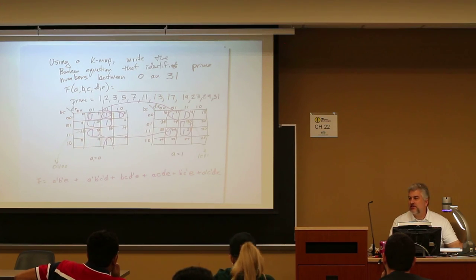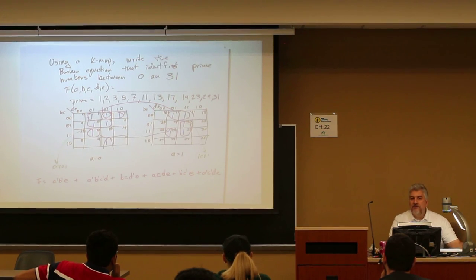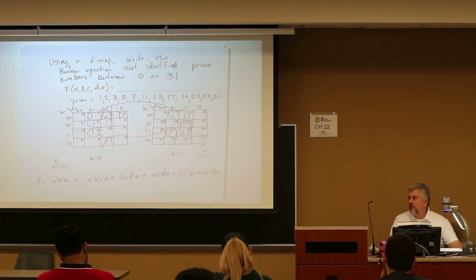All right. So who would have been able to solve this in a quiz? No way on earth, huh? All right. And so that is an example of using a K map for prime numbers.